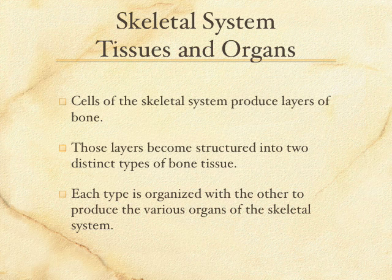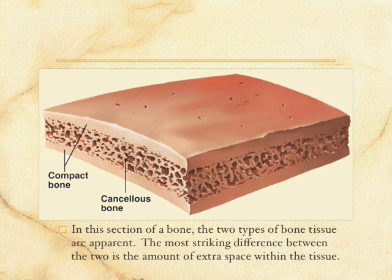You're going to see that there's an organization of both types in order to create what we would call a bone. This picture right here helps us visualize these two types of bone. Compact bone is dense bone — this is bone where the layers are very densely put together so that you wind up with a thick, tough layer of bone.